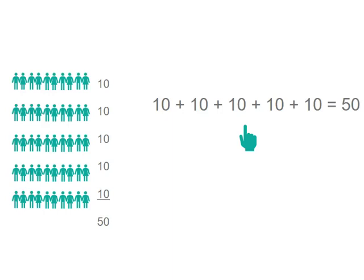So we could write that as a number problem as ten plus ten plus ten plus ten plus ten equals fifty. It's the same as five groups of ten equals fifty. And when you're doing your times tables, you might say five tens are fifty, which means five groups of ten equals fifty.